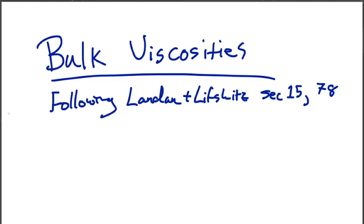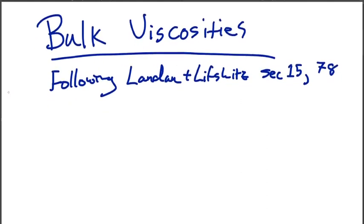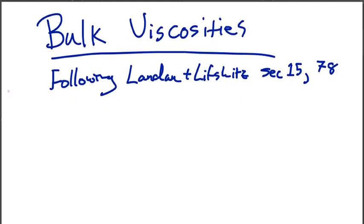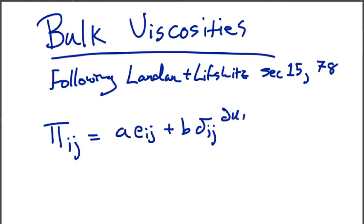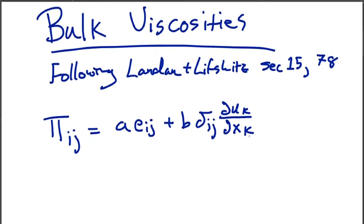So previously, we wrote down our viscous stress tensor. We said that there was a general form. We said that pi_ij is A times e_ij, and then B times delta_ij operating on dU_K/dX_K.